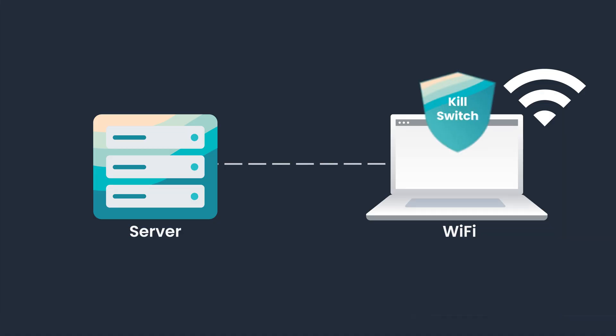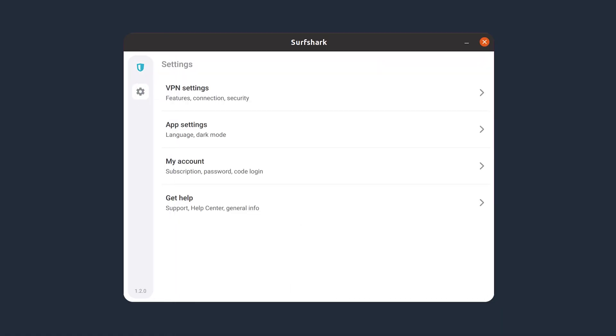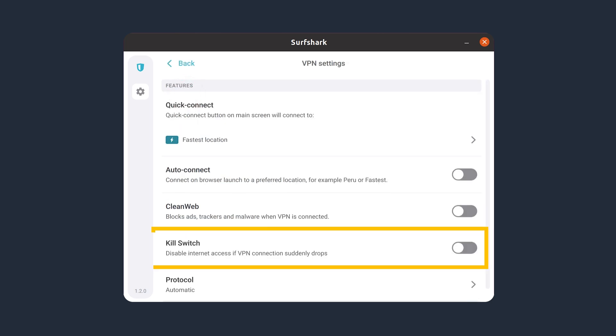As you may know, the way kill switch works is that it will automatically disable your internet connection if you accidentally disconnect from the VPN. This can happen by accident or if a VPN server goes down, which doesn't happen very often. But if it does, it's nice to know that your data will not be exposed. This feature can be enabled in the Settings > VPN Settings menu. Personally, I really like this update since I run the kill switch on every device that I have Surfshark on.